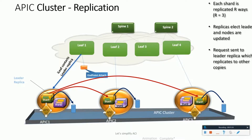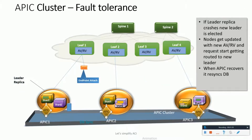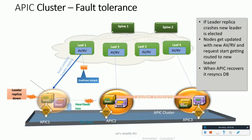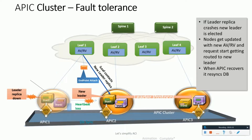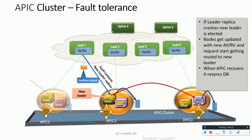Now let's suppose that before replicating the data, controller APIC 1 fails. As a result, a new APIC leader election takes place and chooses a new leader — APIC 2 in this case. The leaf then contacts APIC 2 for config replication. As soon as APIC 1 comes back up, DBSYNC synchronizes the data from APIC 2 back to APIC 1.